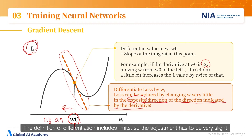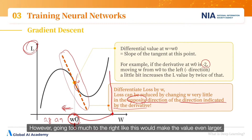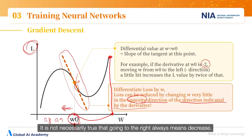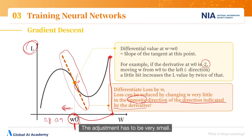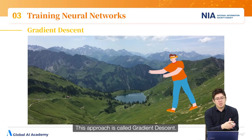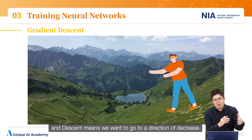Since the definition of differentiation involves limits, the adjustment has to be very slight. Going to the right means the loss decreases as the value moves right; however, going too far to the right could make the value even larger. It is not necessarily true that going right always means decrease — differentiation sees changes with tiny changes. The adjustment must be very small. This approach is called gradient descent, where gradient means vector differentiation and descent means we want to go in a direction of decrease.